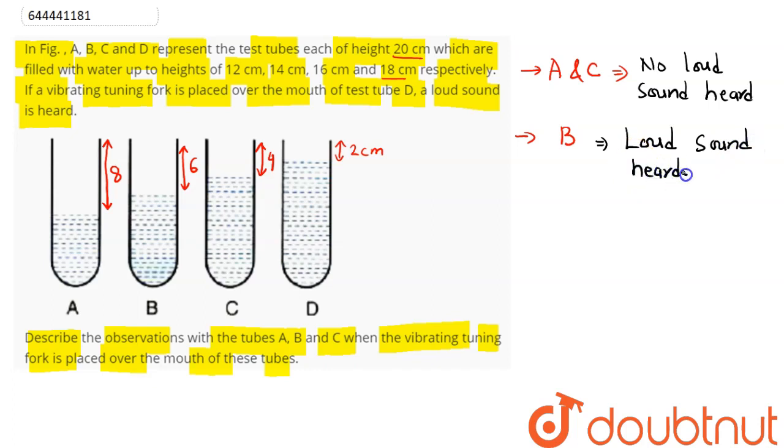If we assume B, that is f equal to v by lambda, and we have for the fundamental mode lambda by 4 as L, so lambda becomes equal to 4L. Therefore, frequency is inversely proportional to the length.